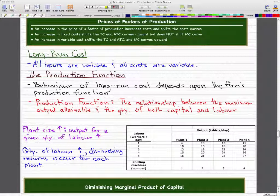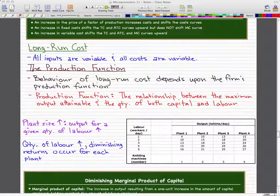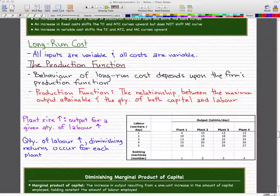The behavior of long-run costs depends upon the firm's production function. The production function is the relationship between the maximum output attainable and the quantity of both capital and labor. As plant size increases, the output for a given quantity of labor increases. When the quantity of labor increases, diminishing returns occur for each plant.